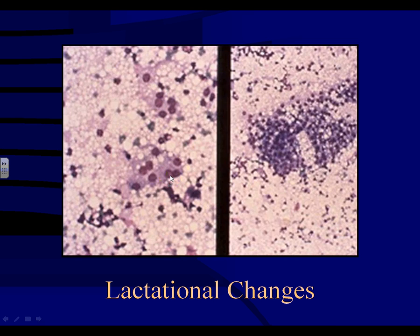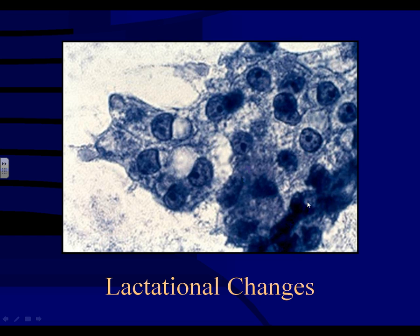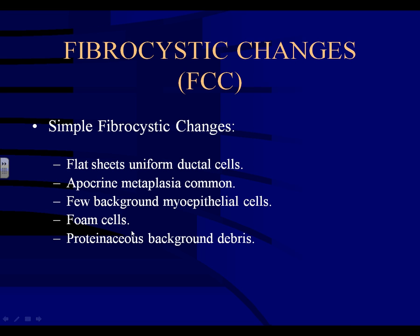More examples of lactational change on PAP stain — notice the granular background from all the secretory material. Groups retain some cohesiveness but the cells have abundant vacuolated cytoplasm and enlarged nuclei, often with prominent nucleoli because these cells are very active. Higher power shows the same: cohesive group of cells with abundant vacuolated cytoplasm, enlarged nuclei with prominent nucleoli — very characteristic features of lactational change.